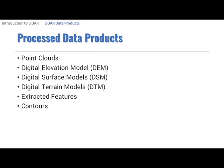Point clouds with their rich attribute information are the fundamental LiDAR data product from which all other products are developed. The points in a LiDAR point cloud have three-dimensional coordinate values with additional information. After LiDAR data are collected, calibrated, and checked for consistency, the raw points can be classified according to the features off which they reflected.